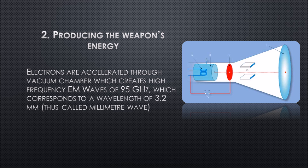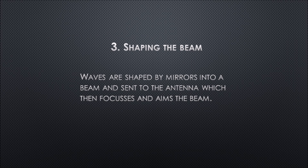The second step is producing the weapon's energy. Electrons are accelerated through a vacuum chamber, which creates high frequency EM waves of 95 GHz, corresponding to a wavelength of 3.2 mm. The third step is shaping the beam. Waves are shaped by concave mirrors into a beam and sent to the antenna, which then focuses and aims the beam.